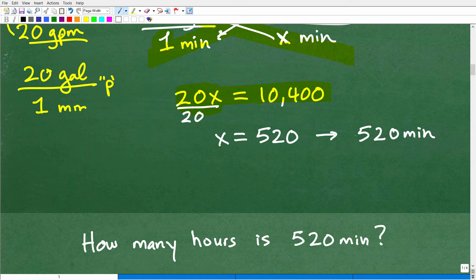Now, once we have this cross product, we've created a nice basic algebraic equation for ourselves. So we have 20X is equal to 10,400. So how do I solve for X? Well, again, we're just applying basic algebra. I'm going to divide both sides of the equation by 20. So this is 10,400 divided by 20. So X is equal to 520, okay?